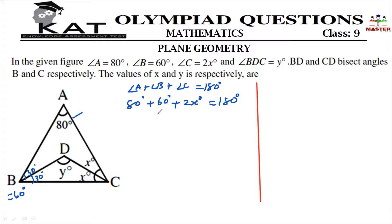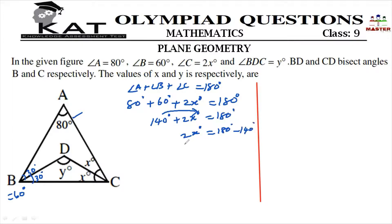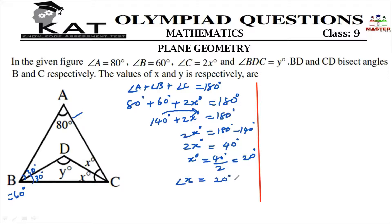80 plus 60 is 140 degrees. So, 140 degrees plus 2x degrees is equal to 180 degrees. Moving 140 to the right-hand side: 2x degrees is equal to 180 degrees minus 140 degrees, which gives 2x equals 40 degrees. Therefore, x is equal to 40 degrees divided by 2, so x is equal to 20 degrees.